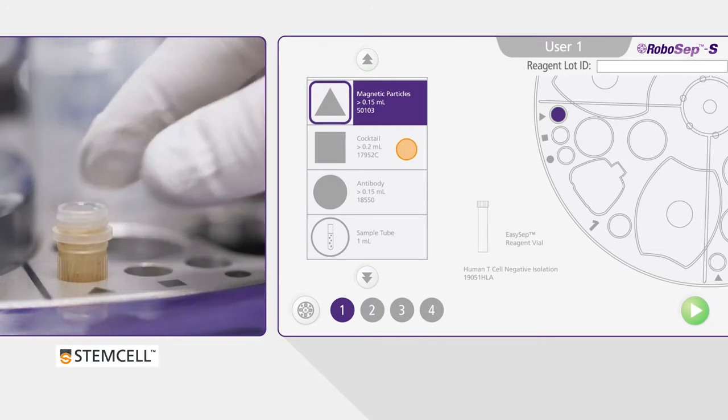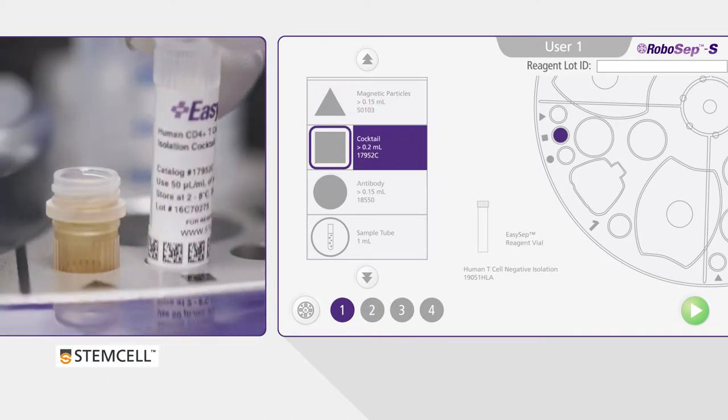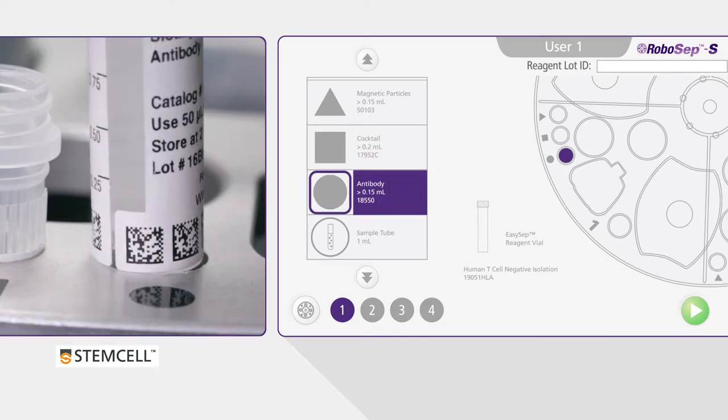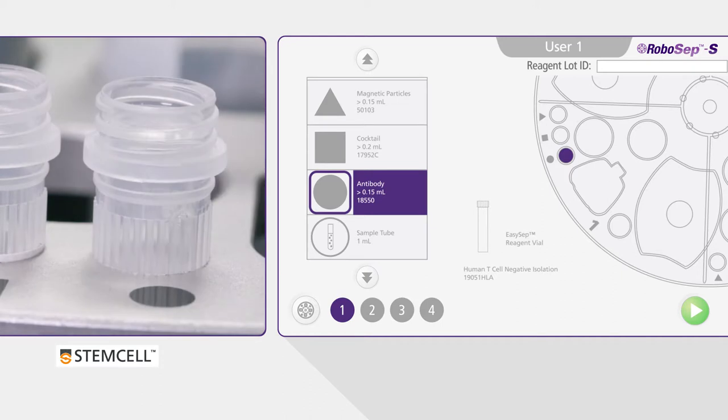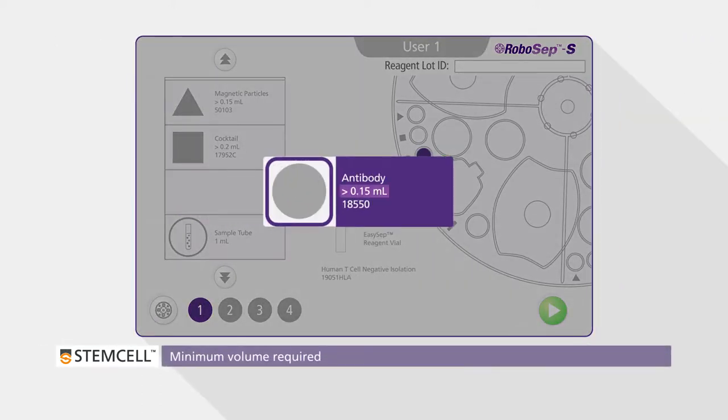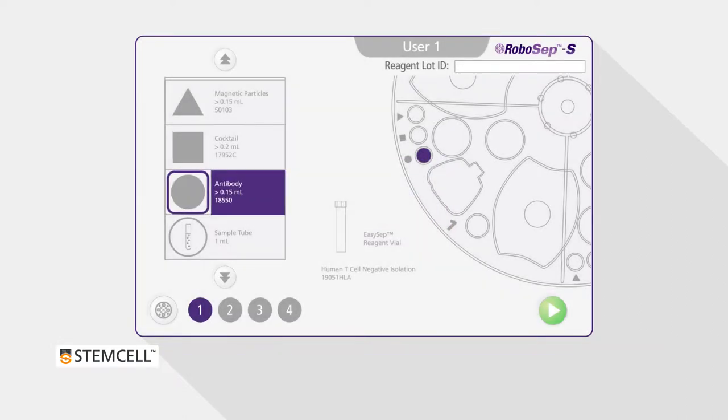Load the reagent vials one at a time, following the on-screen prompts. You will see the corresponding part number for each of the reagents that need to be loaded. Make sure that each vial contains the minimum reagent volume required for a given cell separation. This will be displayed below the name for each reagent.